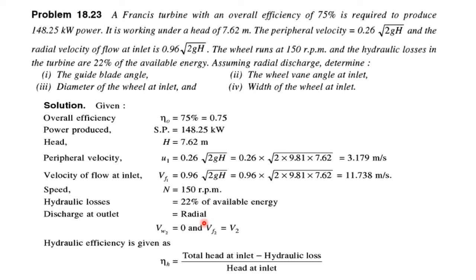Discharge at outlet is radial, so Vw2 = 0 and Vf2 = V2. Hydraulic efficiency is given by total head at inlet minus hydraulic losses upon head at inlet.